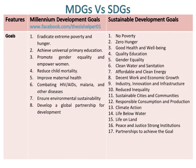There are 8 goals of MDGs. Goal 1 is Eradicate Extreme Poverty and Hunger. Goal 2 is Achieve Universal Primary Education. Goal 3 is Promote Gender Equality and Empower Women. Goal 4 is Reduce Child Mortality. Goal 5 is Improve Maternal Health. Goal 6 is Combating HIV, AIDS, Malaria, and Other Diseases. Goal 7 is Ensure Environmental Sustainability. Goal 8 is Develop a Global Partnership for Development.